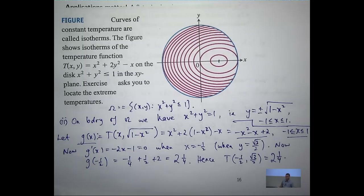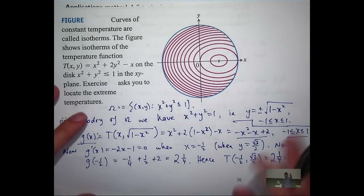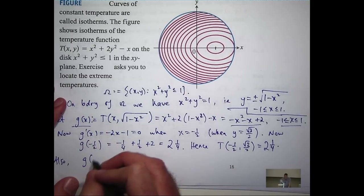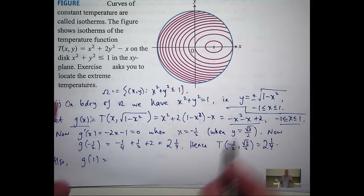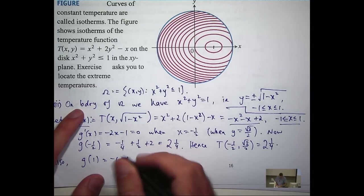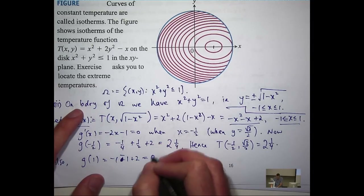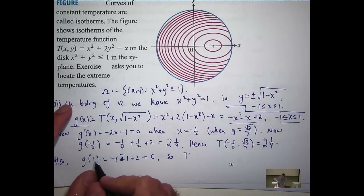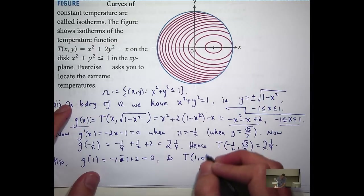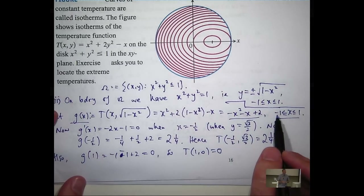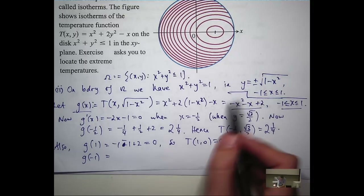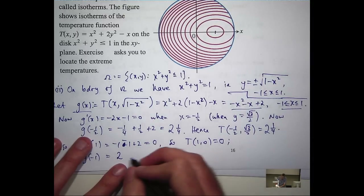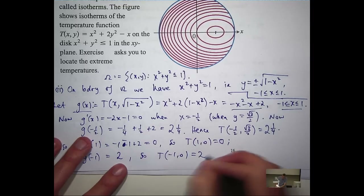I haven't tested the end points yet, and a lot of students forget to test the end points of the interval. Here we have x between minus one and one, so we need to check both end points. If I take the right-hand end point x equals one and substitute, I get minus two plus two, which is zero. So T(1, 0) = 0. For the other end point x equals minus one, you'll get positive two, so T(-1, 0) = 2.